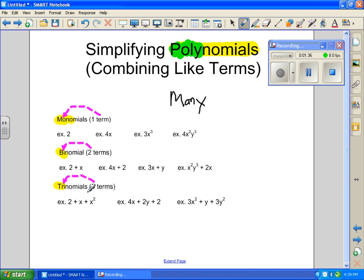So it's three things, three nomials, three terms. 2 plus x plus x squared, 4x plus 2y plus 2. So we'll see three different things, either added or subtracted together. So monomials, 1, binomials, 2, trinomials, 3.